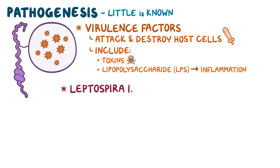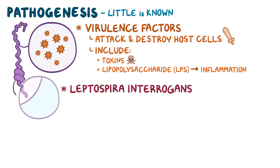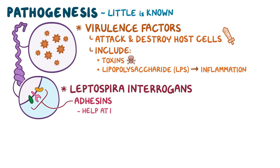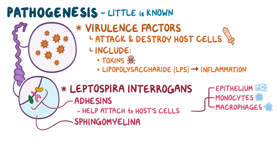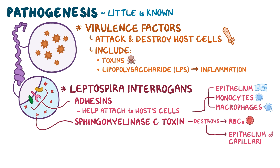For example, leptospira interagans, the most common cause of leptospirosis, has adhesins, which are proteins that help this bacteria attach to the host cells, usually epithelium, monocytes, and macrophages. It also releases sphingomyelinase C toxin, which destroys red blood cells, as well as the endothelium of the capillaries, which causes hemorrhage.